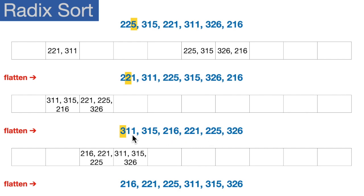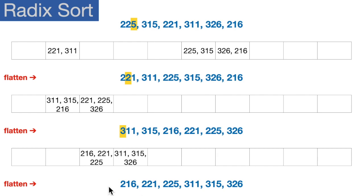We're going to do one more iteration using the leftmost digit, the most significant digit. Starting with 311 — that's a 3 — we add it into the threes bucket. 315 goes onto the end of the threes bucket. 216 goes into the twos bucket. 221 goes into the twos bucket. 225 goes into the twos bucket. And 326 goes into the threes bucket. Then we flatten this list of lists into a one-dimensional list, and it should be fully sorted: 216, 221, 225, 311, 315, 326. They are indeed fully sorted.